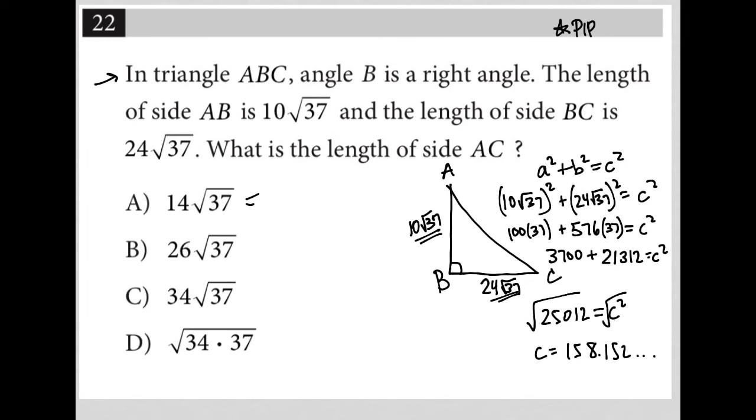I can go to choice A and say, well, what is 14 times the square root of 7? And I get that this is equal to 85 point whatever, which is not the value that we want. How about choice B? What is 26 times the square root of 37? And there I do get the exact same value, 158.152, which means choice B must be the correct answer.